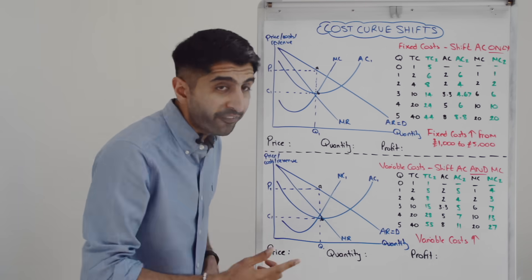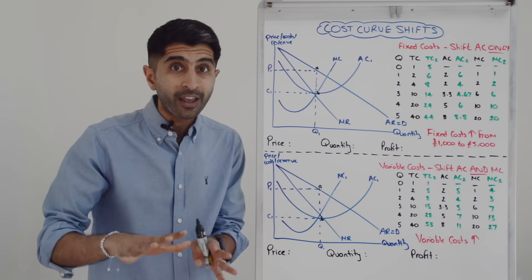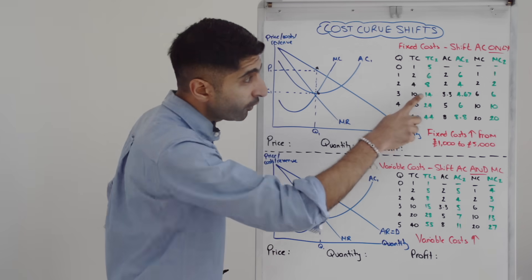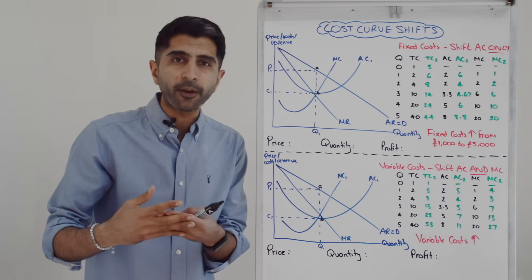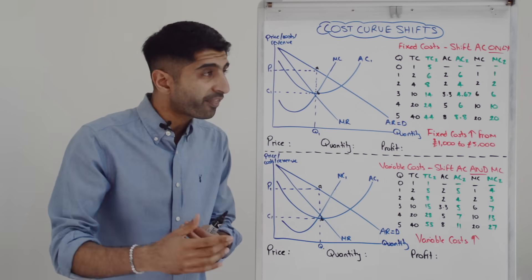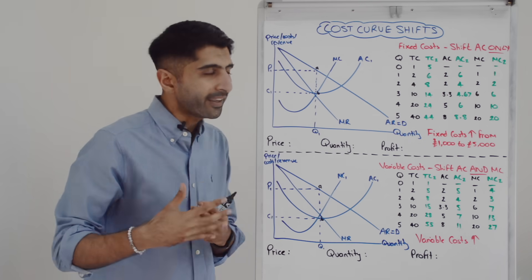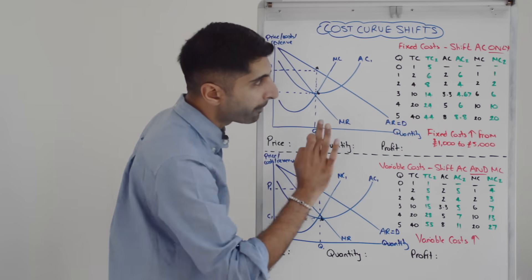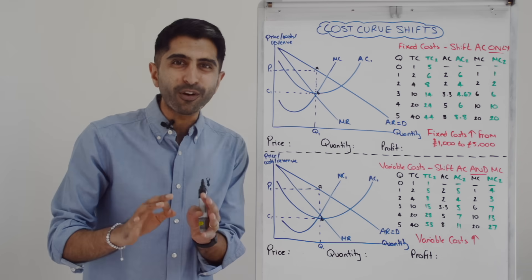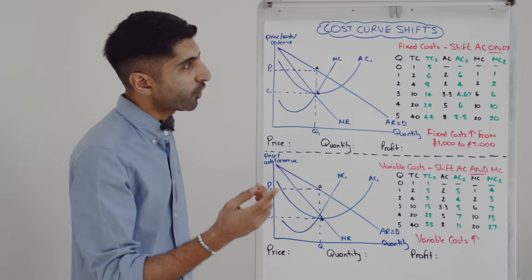But now let's say that fixed costs for this business have increased from initially 1000 pounds to now 5000 pounds. Focus on the numbers in green now. We can see that fixed costs have increased to 5000 pounds. That's an increase of 4000 pounds at each output level. So at each output level, let's increase TC by 4000 pounds, getting us these green numbers over here.